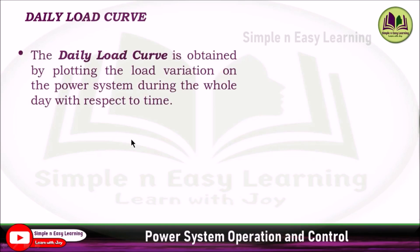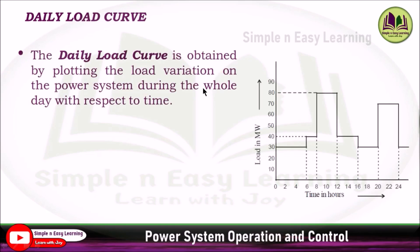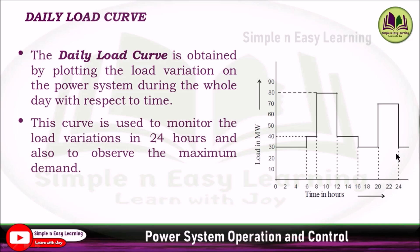The daily load curve is obtained by plotting the load variation on the power system during the whole day — that is, for 24 hours. If you draw and plot the change in load over a single day, you get the daily load curve. This curve is used to monitor the load variation in 24 hours and also to observe the maximum demand.